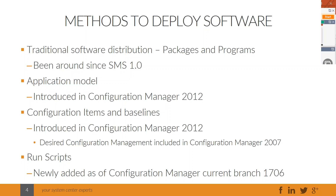Let's talk about methods to deploy software. You'll be familiar with most of these, but there are a couple of new things you may not know. First is traditional software distribution — sometimes called legacy software distribution — which is the old packages and programs method. This has been around since SMS 1.0 in various forms. You create a package, create various programs for that package, set your settings, then deploy the program from the package to collection members.